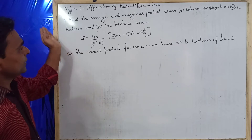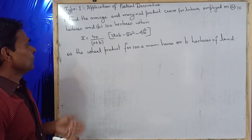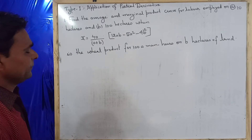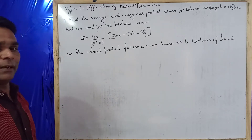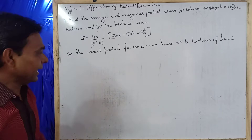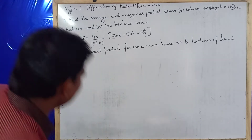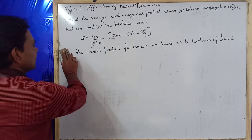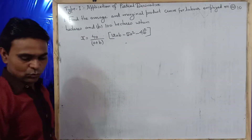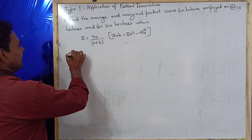And when B equals 100, what will be the marginal productivity and average productivity, APA and MPA? So first we are given the production function, and we need to find out APA and MPA.